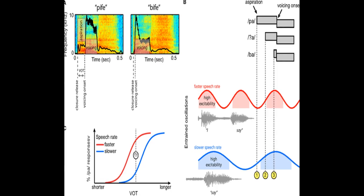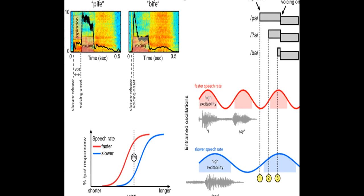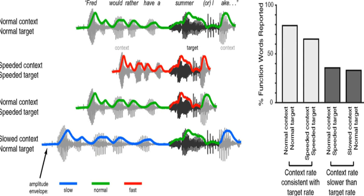The article suggests a framework through which neural entrainment to speech rhythm can explain effects of speech rate on word and segment perception.